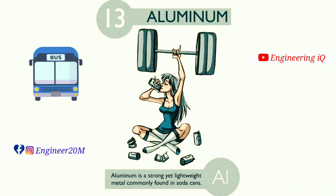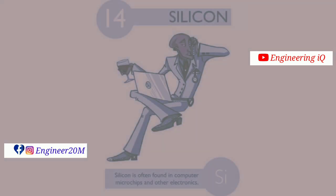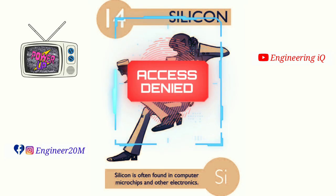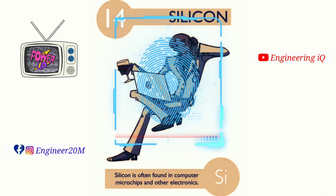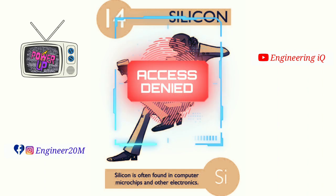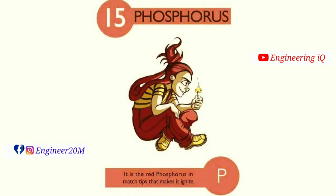Silicon: atomic number of silicon is 14. Silicon is often found in computer microchips and other electronics. It is denoted by Si. Phosphorus: atomic number of phosphorus is 15. It is the red phosphorus in match sticks that makes them ignite. It is denoted by P.